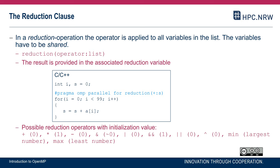The reduction clause also performs the initialization — by default it initializes with a neutral value, which for addition is zero. The reduction operation ensures our code is correct and expresses additional information so the compiler can understand what we want, and in consequence hopefully optimize the code with respect to cache usage and the right mix of instructions. I would always recommend using a reduction clause and never doing the manual correction I illustrated on the previous slide — I only did that to illustrate the difference between private and shared variables.